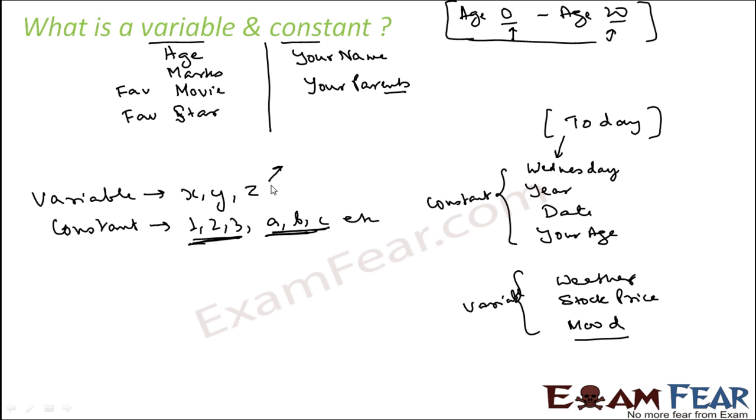So if you talk about any expression, polynomial for example, 3x squared plus 5x plus 2. Or let's take another polynomial, 3x plus 4y plus 2z. So if you see here, these are variables. This is the constant.